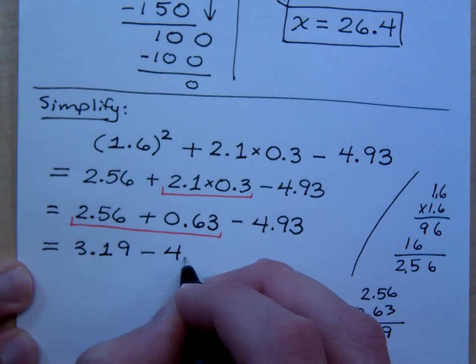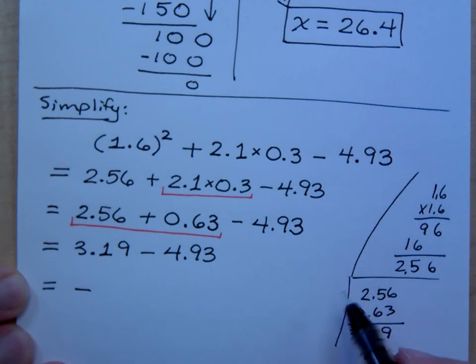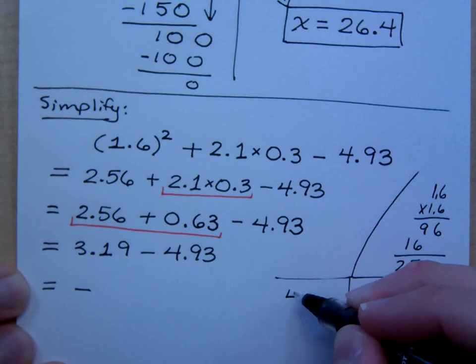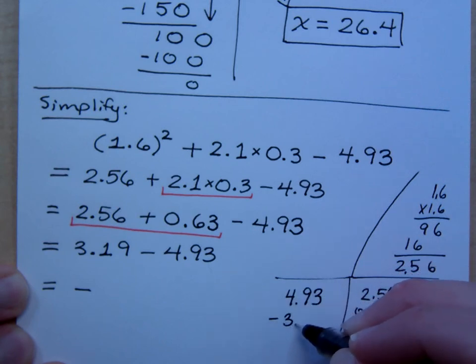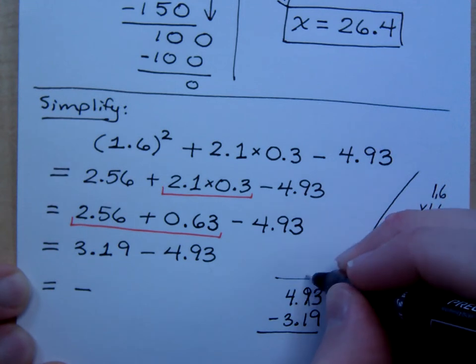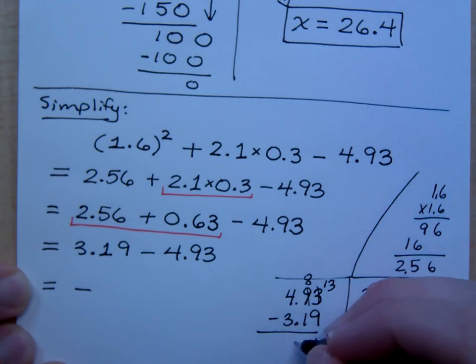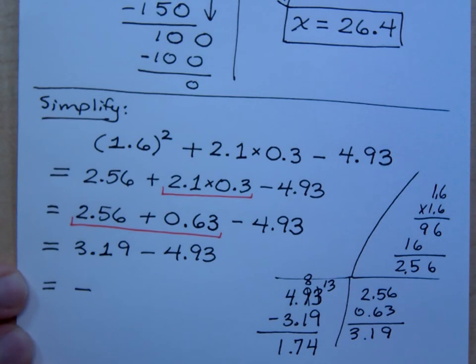3.19 minus 4.93. Before I even do the rest of this, what do you know about your answer? Why is it going to be negative? The larger number is negative. That means I need to just do subtraction. So again, I've got more scratch work that I need to take care of over here on the side. When you subtract, it's always the larger number, the 4.93, minus the smaller number, in this case the 3.19. So in order for us to subtract, we borrow from this guy to make it an 8 to turn this into a 13. So there's 4, 7, 1. Is that what you guys got? So negative 1.74.